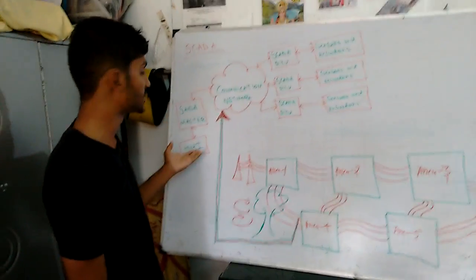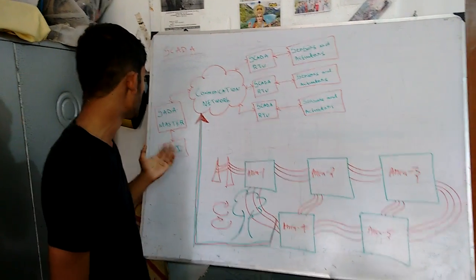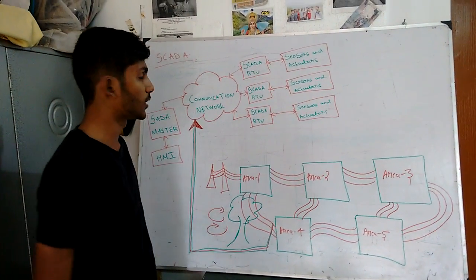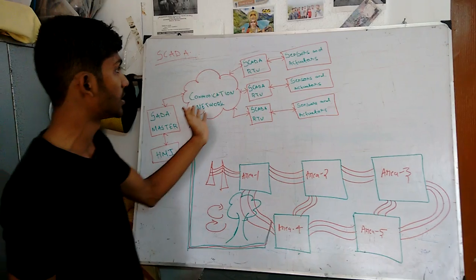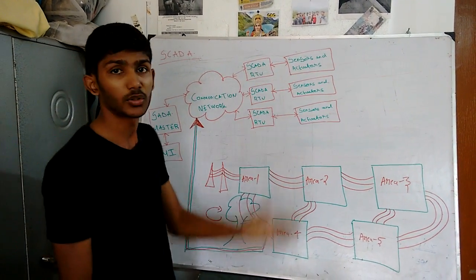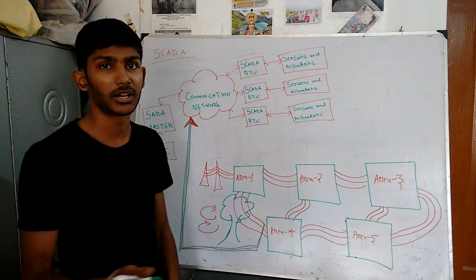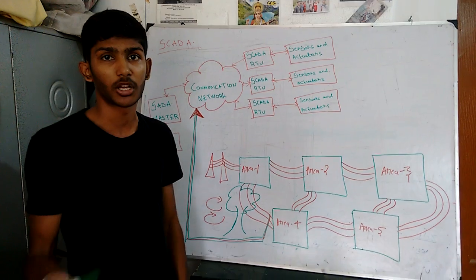The communication network is closely related to the SCADA Master and HMI. The communication network is used to communicate from the SCADA Master to the SCADA RTU. SCADA RTU is also used for interfacing, but it operates automatically using a microprocessor or controller.